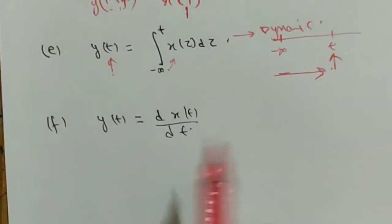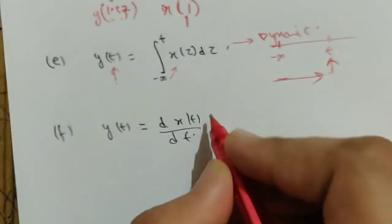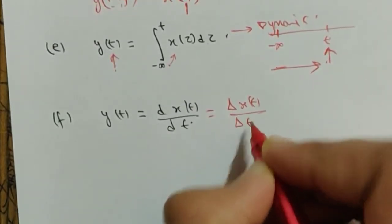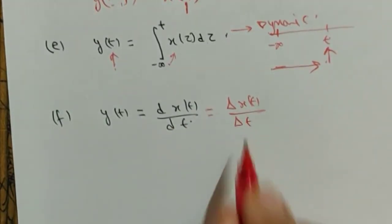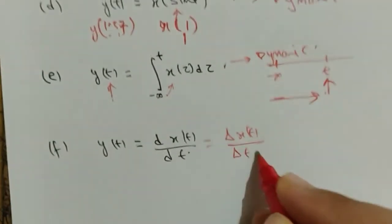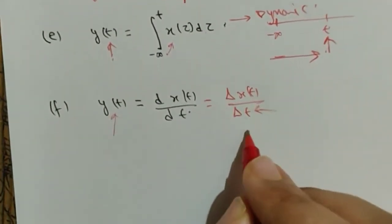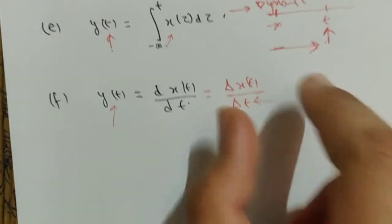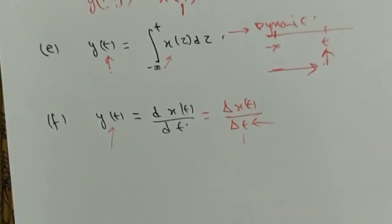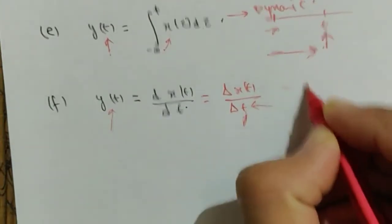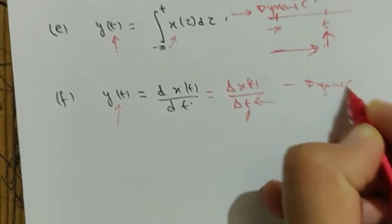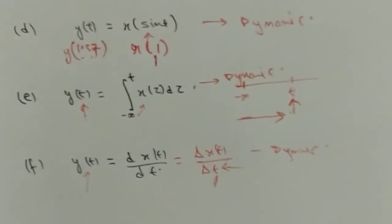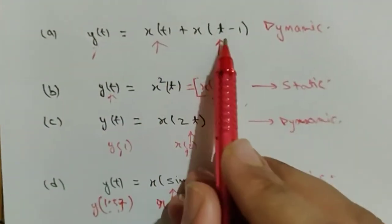Next question: y(t) = dx(t)/dt, which can also be written as Δx(t)/Δt — change in x(t) divided by change in time. Since there is change in time involved, the output must depend on past, present, or future values of the input. Therefore this is a dynamic system.